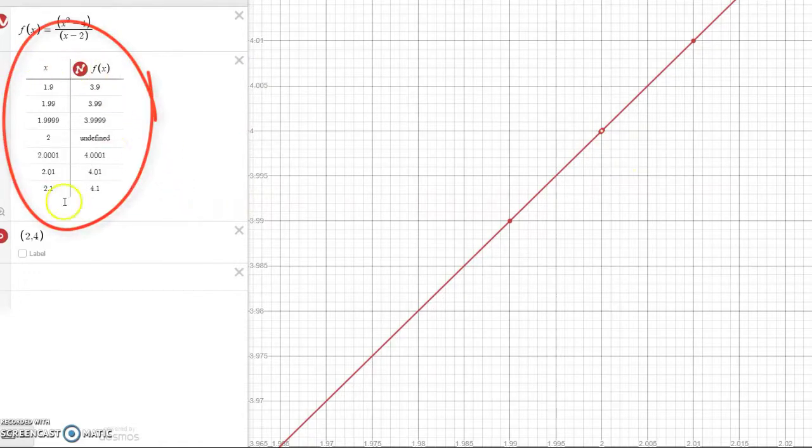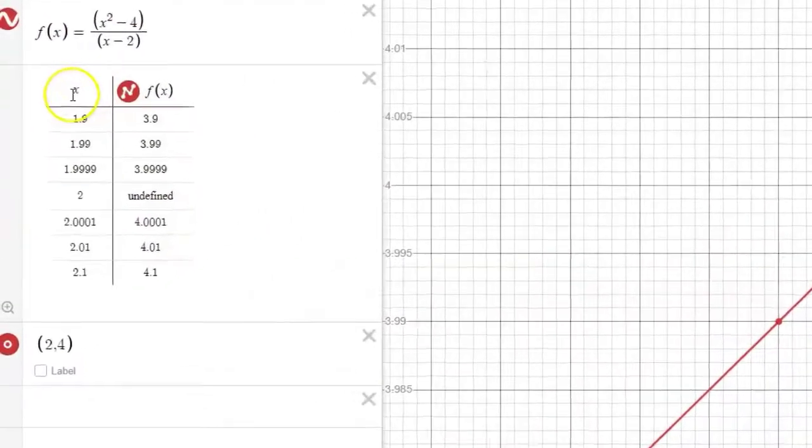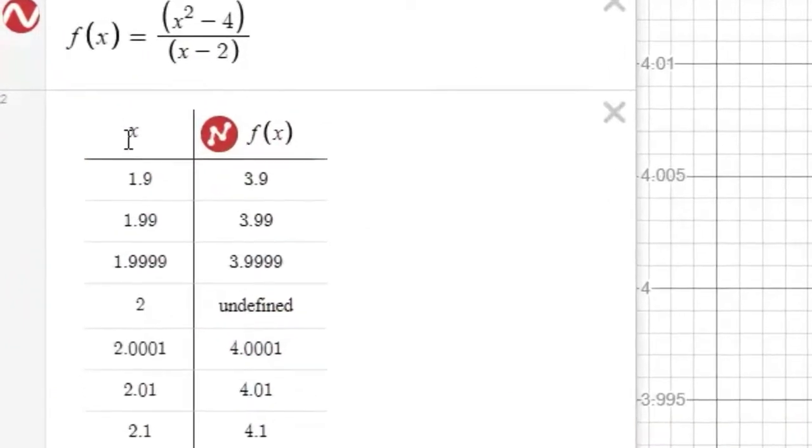And to really convince you, we could look at a table of values. Notice in this table we consider input values of 1.9, 1.99, 1.9999 and the output quantities are 3.9, 3.99, 3.9999. So the evidence is pretty strong that as our input quantity gets closer and closer to 2, our output quantity gets closer and closer to 4.